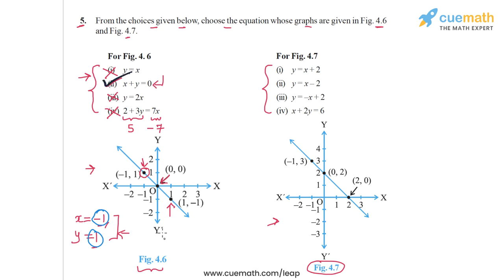We don't need to check any other point because there is no other option available. But if you want, you can check the other points also. You can check that 0 comma 0 will also satisfy the second equation, and 1 comma minus 1 will also satisfy the second equation. So the answer for figure 4.6 is the equation x plus y equal to 0.